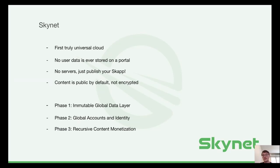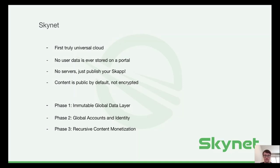Phase two also adds the ability to follow other users. For example, your friend creates a blog using a SCAP and you can use a different SCAP to read the blog. The final phase is phase three, where we add monetization. You will be able to charge money for your content — for example, the images you upload. Other people will be able to reuse your content and put their own fee on top of it. So if you are a photographer and you upload pictures, someone else can create logos or artwork out of those pictures and add their own fee.